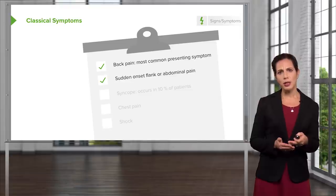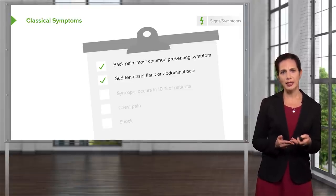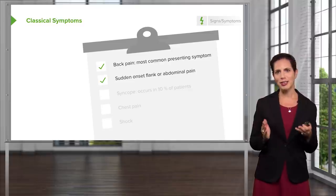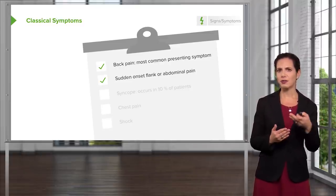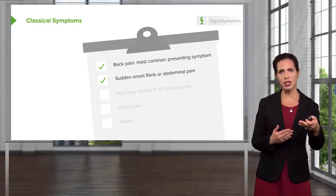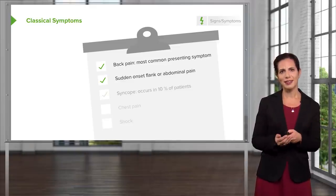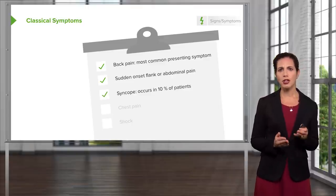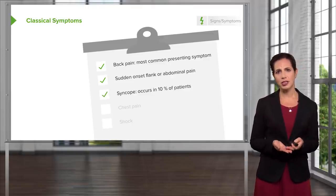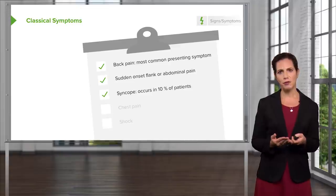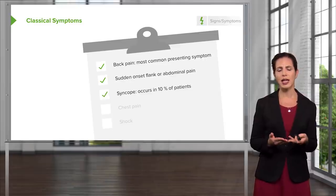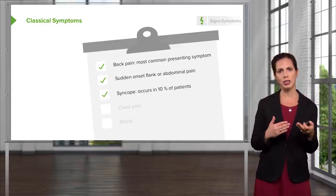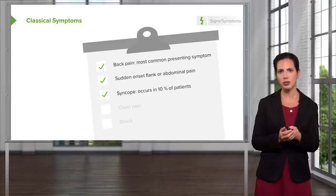It can also present with sudden onset of flank or abdominal pain. Again, lots of patients come to the ED for these complaints, so sorting out in whom we have to worry about this life-threatening condition can be challenging. Syncope or an episode of passing out occurs in about 10% of patients — a small proportion, especially those in whom there's already been rupture or contained rupture of an AAA.